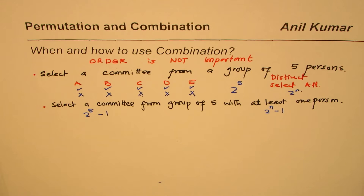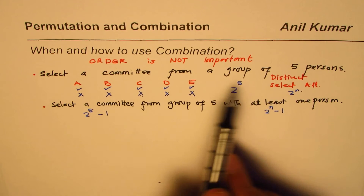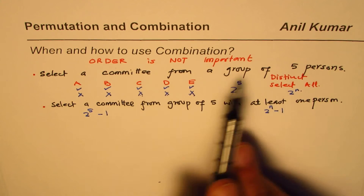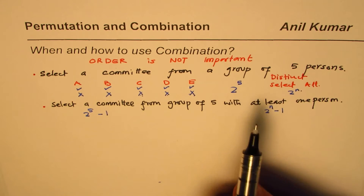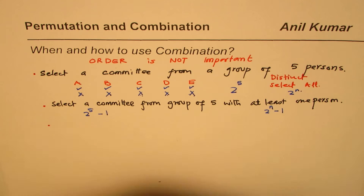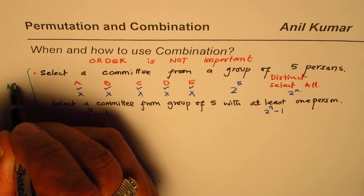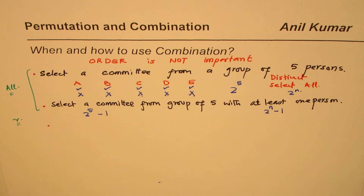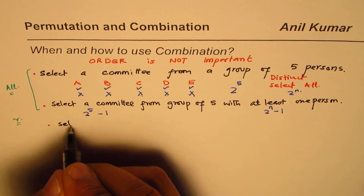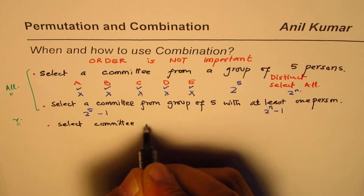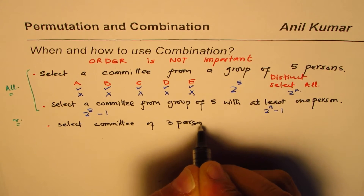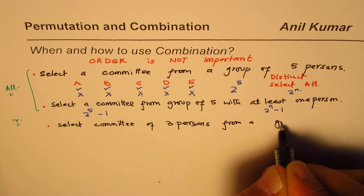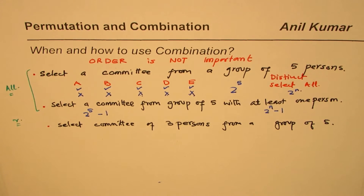Now let's work on the same problem differently. We still have a committee to be selected from a group of five persons, but this time we are not selecting all five — we are selecting a limited number r. Specifically, let's select a committee of three persons from a group of five distinct persons.